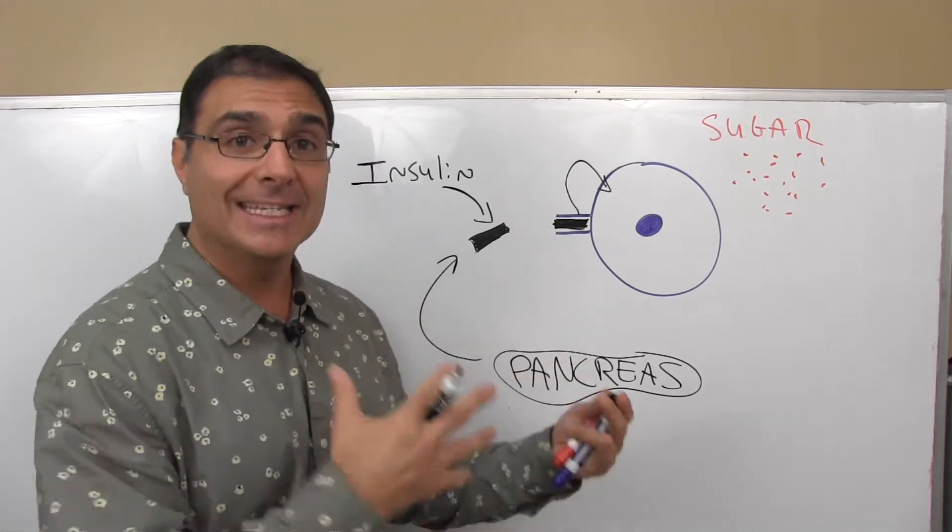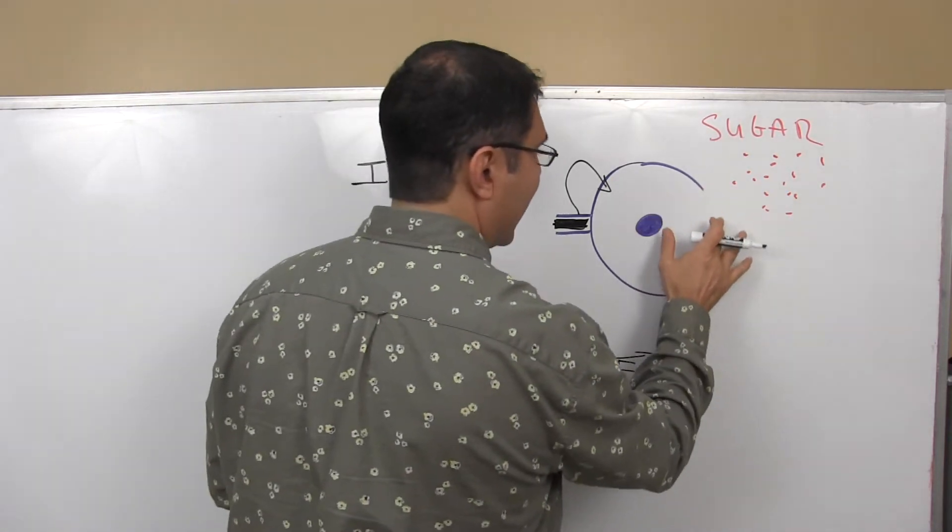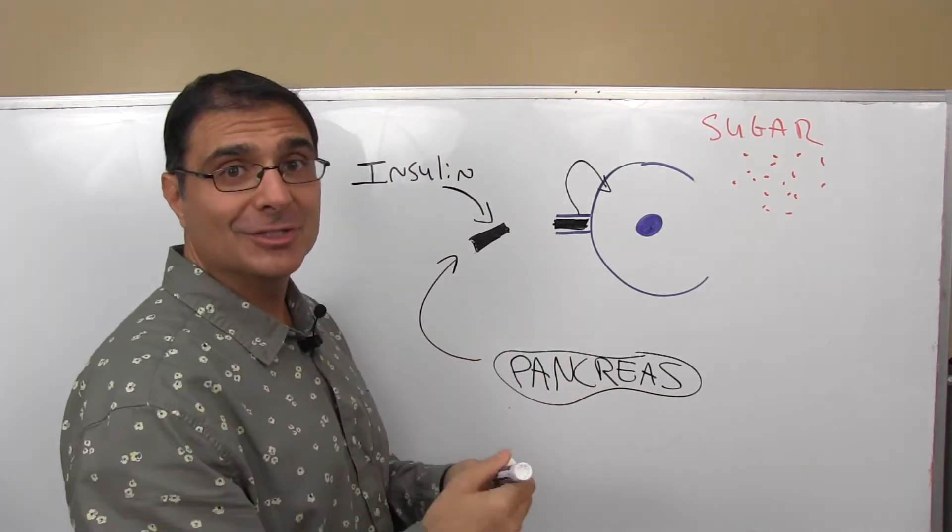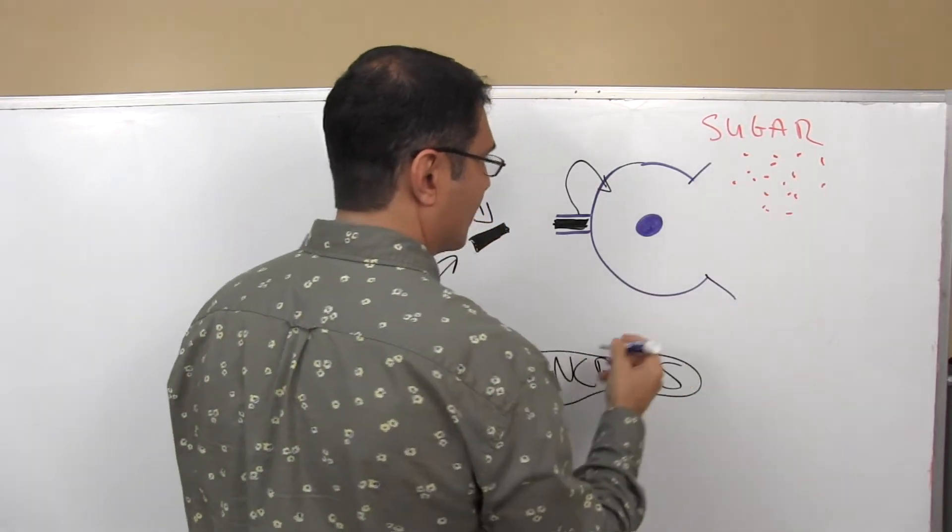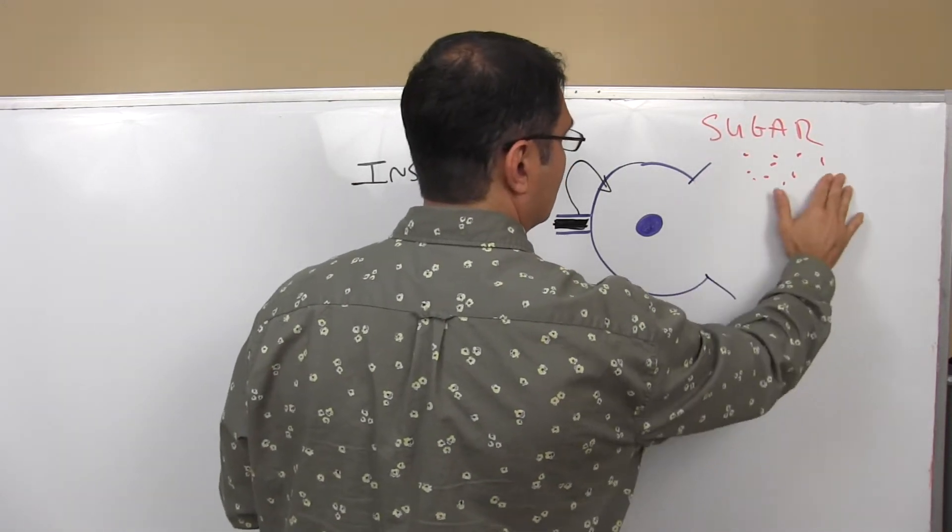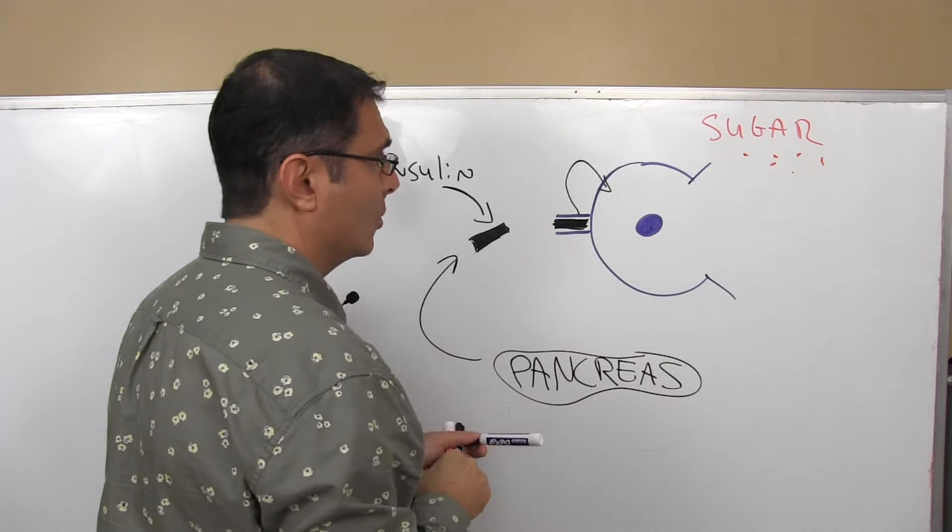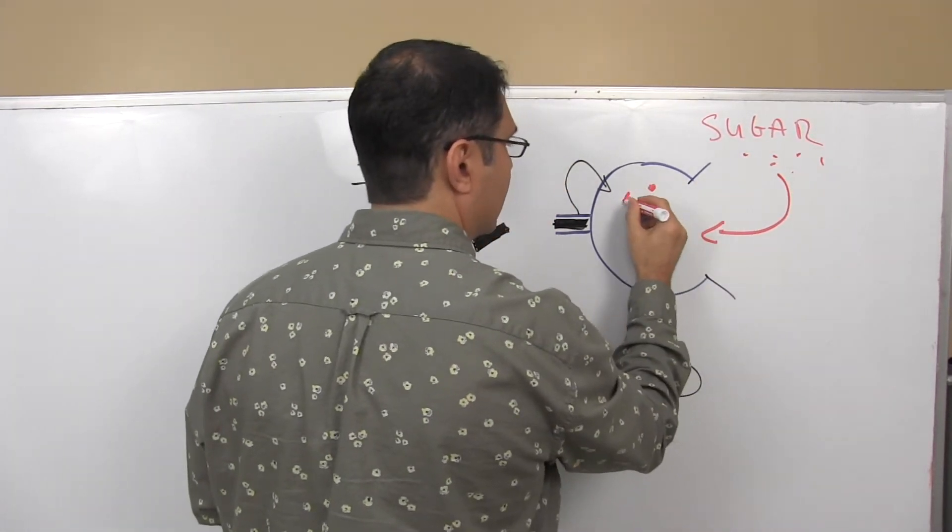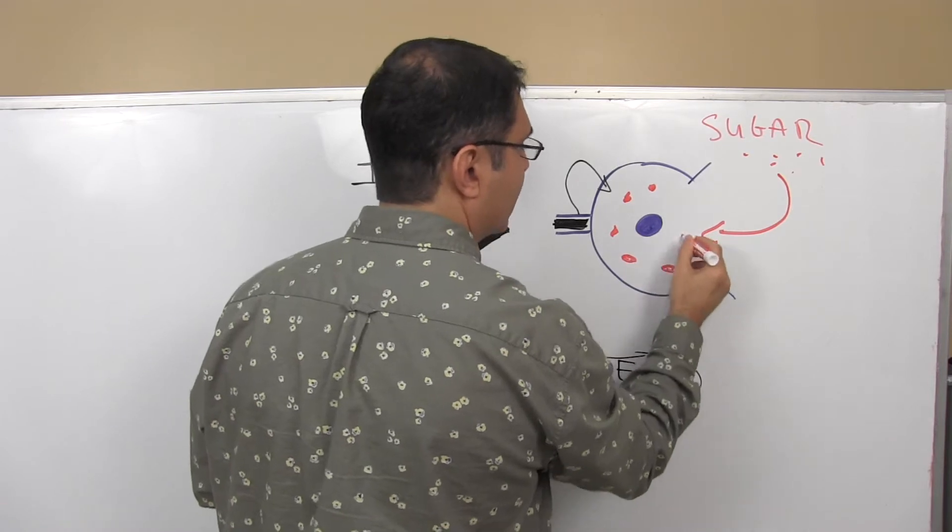So let's get the blood sugar into the cell where it belongs. So what happens now is the cell opens up, it doesn't really happen just like this, but for intents and purposes, this will work. So the sugar then gets reduced in the blood and it goes into the cell.